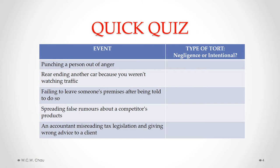The first event is punching a person out of anger. That's an intentional act, so that's considered to be an intentional tort — specifically the tort of battery. The second event, rear-ending another car because you weren't watching traffic: you caused the rear-ending accidentally, due to carelessness. So that is considered to be a negligence tort.